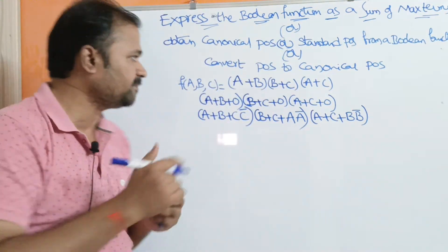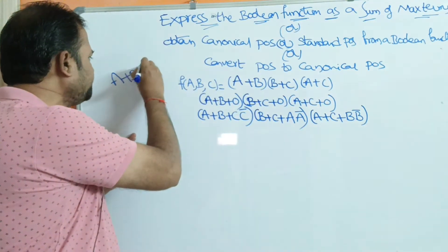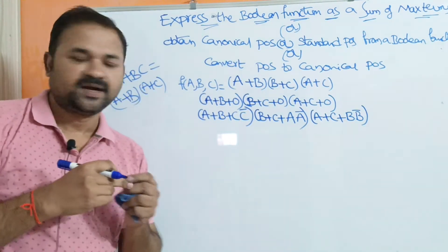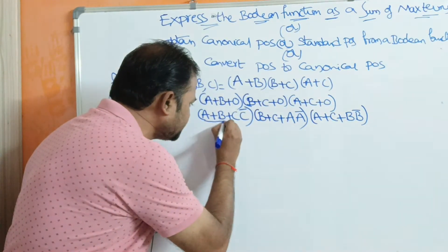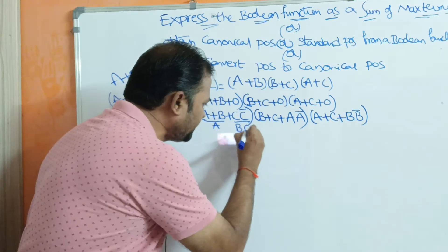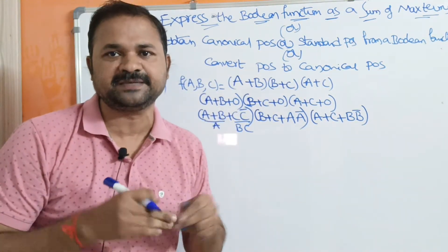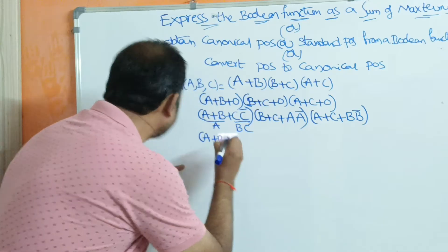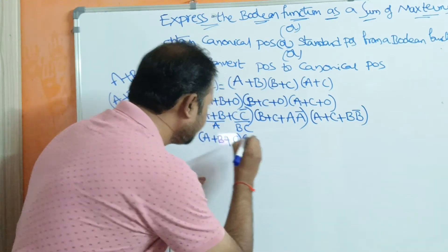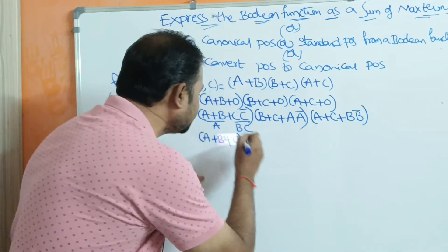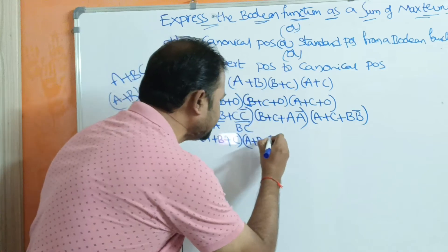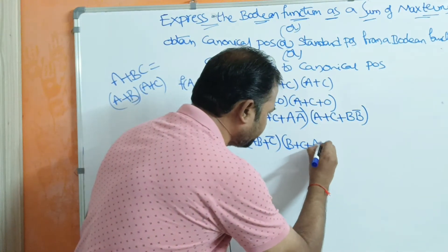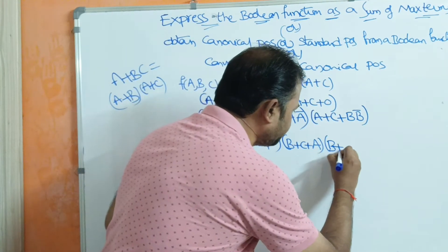We apply the distributive law: A + BC = (A + B)(A + C). If we consider the first expression, let A + B be A and C·C̄ be B·C in the formula. So this is in the form of A + BC, and we can write it as (A + B)(A + C). Substituting back, the first term expands. For the second term, we can write it as (B + C + A)(B + C + Ā).